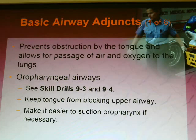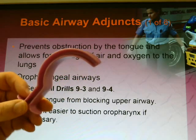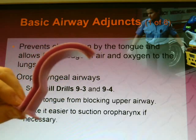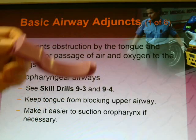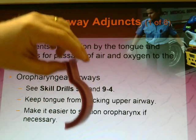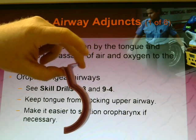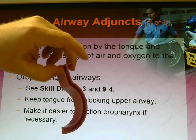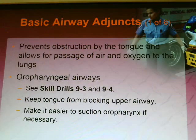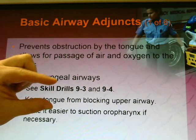Today we're going to pick up with the basic airway adjuncts. This prevents the obstruction by the tongue and allows for passage of air and oxygen into the lungs. Let's start off with an OPA, an Oral Pharyngeal Airway. It looks like this. You'll see different sizes — this is a large one, and you can go down to something about this size.